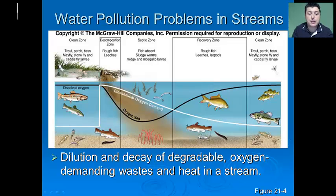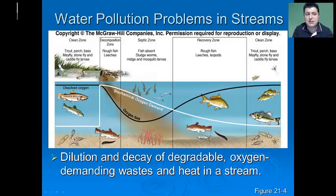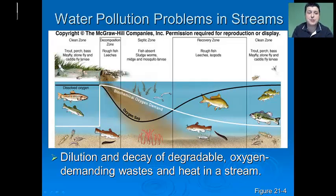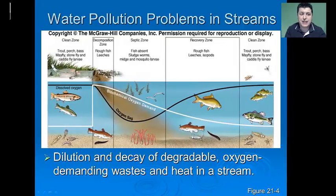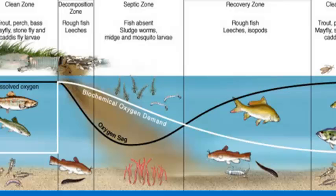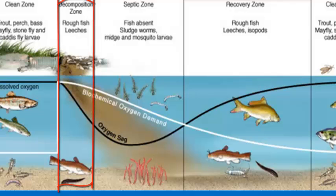Streams and lakes respond differently to degradable water pollutants. As long as a stream isn't overloaded and has good flow, it can actually remediate degradable pollutants without major harm to the stream system. This is why early communities discharged waste into streams and rivers — though as populations increased, streams were unable to keep up with the ever-increasing oxygen-demanding waste. When a small amount of waste is introduced into a flowing stream, the initial area is called the decomposition zone, where bacteria increase in number and start to decompose the oxygen-demanding waste.